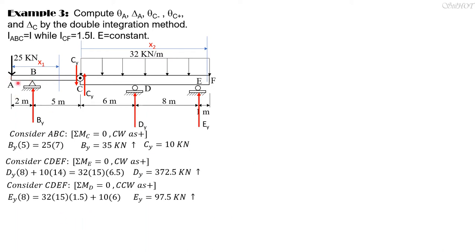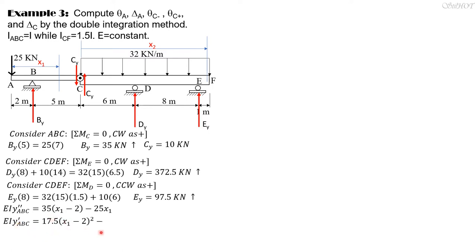For ABC: EI times y'' of ABC equals By times (x1 minus 2), which is 35(x1 minus 2), minus 25 times x1. That's the differential equation for ABC. Integrating once: EI y' of ABC equals 17.5(x1 minus 2)² minus 12.5x1² plus C1. Note that C1 is the slope at A, theta_A.